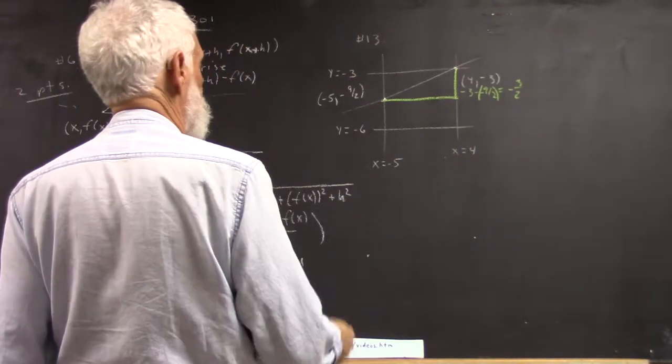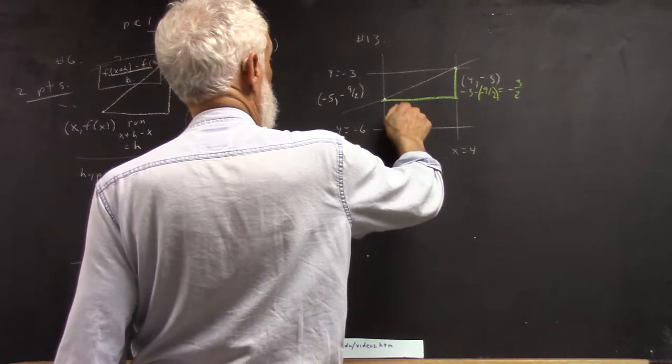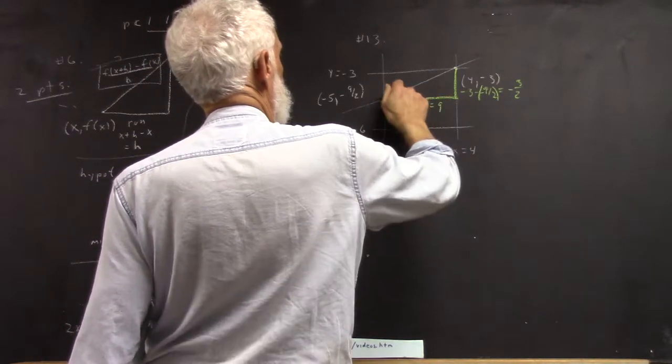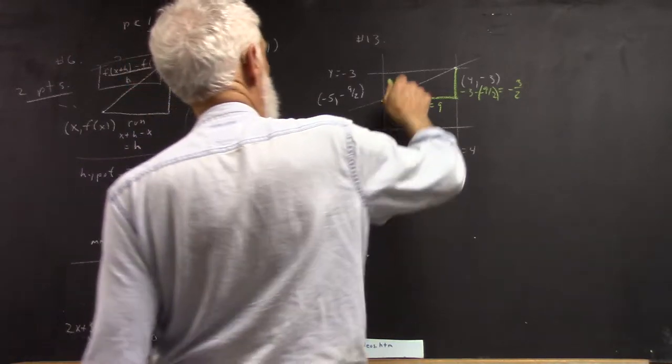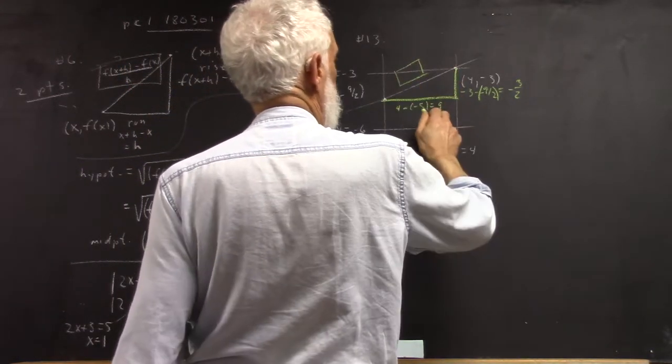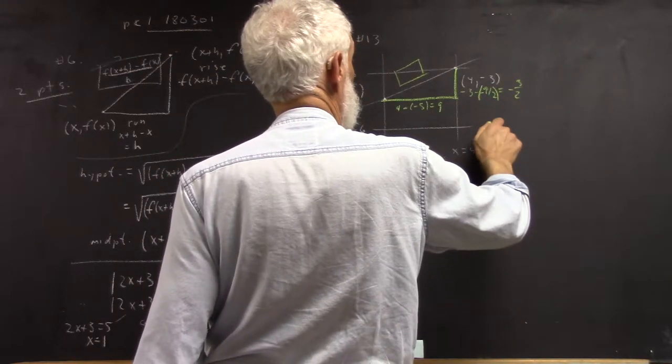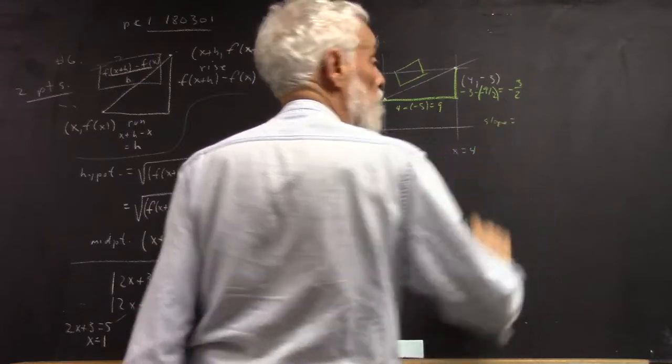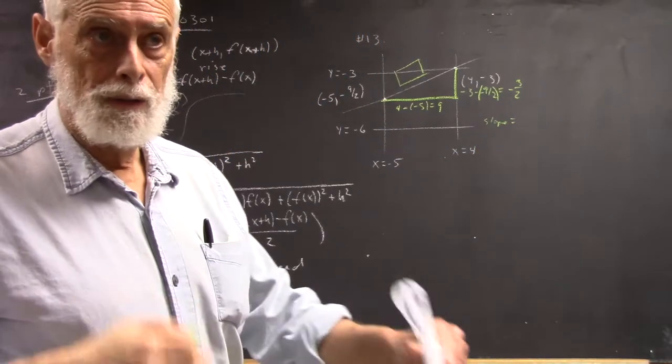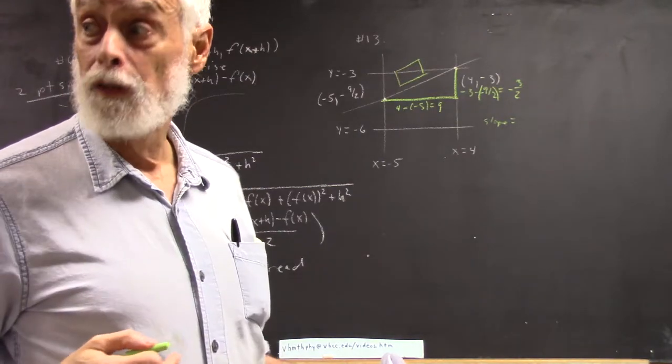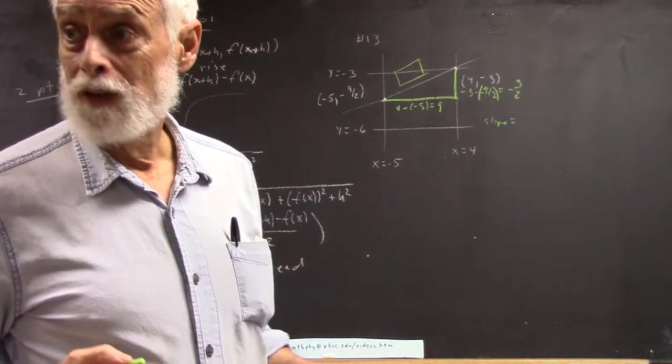And then you've got 4 minus negative 5, which is 9. So the slope is 9 over negative 3 halves. And I got that wrong. So you incidentally did that. You kind of reversed your rise and run. Make sure you're careful about that. I saw a bunch of those.